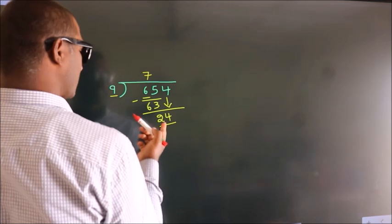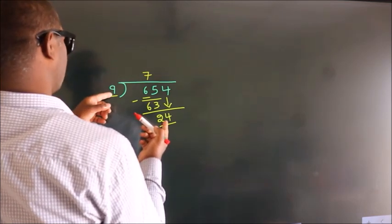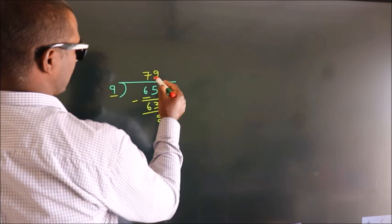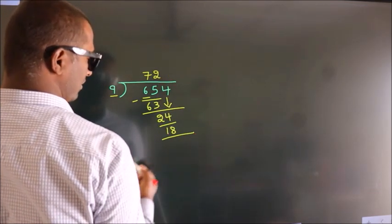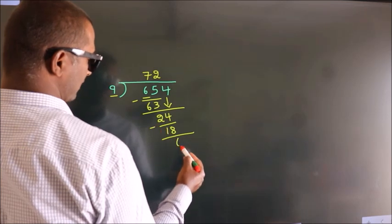A number close to 24 in the 9 table is 9 times 2, which is 18. Now we subtract, we get 6.